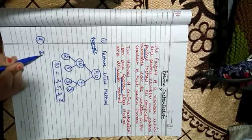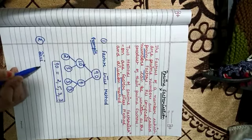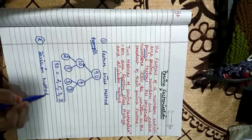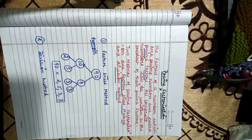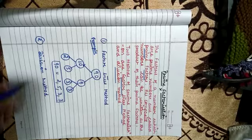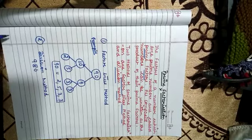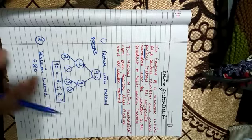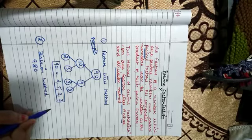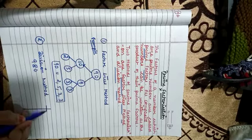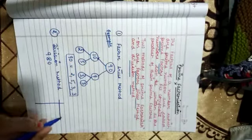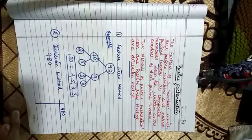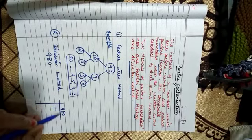Second method is to calculate prime factors: division method. Agar humein bigger number ka nikalna hoga prime factors, so kaise calculate karenge? Like 980. 980 ka agar humein factors nikalna hoga, then this method se nikalna hoga. So division method current report karna hoga. So yeh humara ek small number likha hai. Isko 2 se divide karenge.